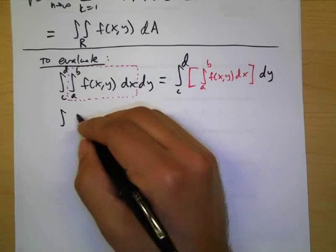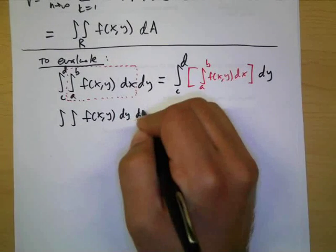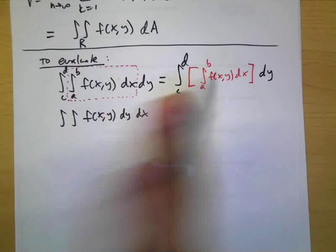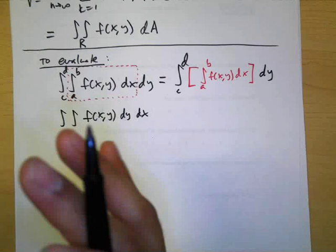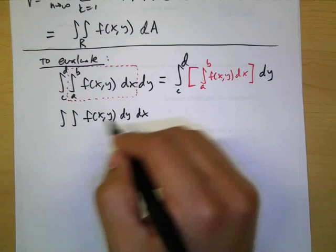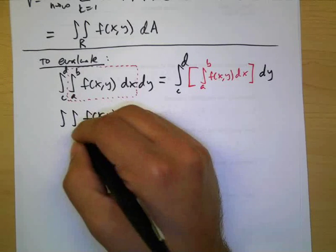So perform the inner integral first with respect to x, plug in the bounds, get your answer, take that answer and then integrate again from c to d with respect to y. Or vice versa - these can be interchanged, it doesn't have to be dx dy it could be dy dx.